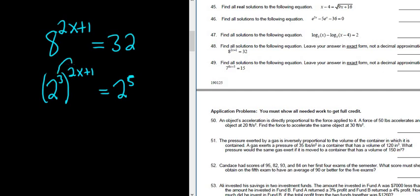This 3 gets distributed to each of these. It's properties of exponents. So it's 2, and 3 times 2x is 6x. 3 times 1 is 3. And then here we have 2 to the 5.